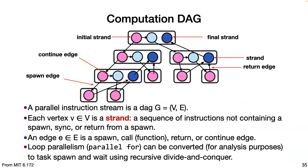More concretely, a parallel instruction stream is a DAG of vertices and edges. Each vertex is a strand — instructions that don't require spawning, syncing, or returning from a spawn. Each edge is a spawn, function call, or return. In the fib example we used recursive calls, but you can also express this through loops using divide and conquer. If you have n iterations, you can think of splitting into n/2 chunks, then n/4, and so on — so the span or height of the recursion is log n.